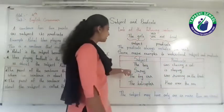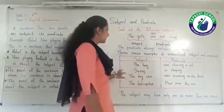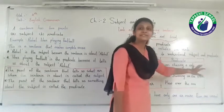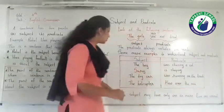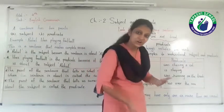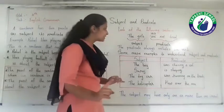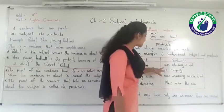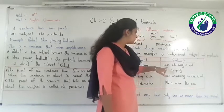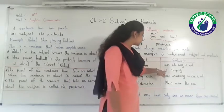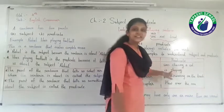Keep in mind: the predicate always includes a verb. Look at the predicate column in both sentences — 'was' in sentence one and 'is' in sentence two are both verbs. So in both sentences, the predicate includes a verb. Third example: 'The toy car was running on the track.' The toy car is the subject and 'was running on the track' is the predicate.